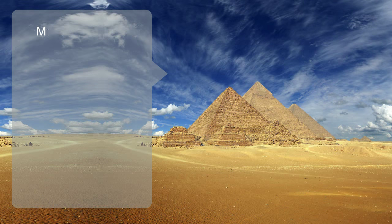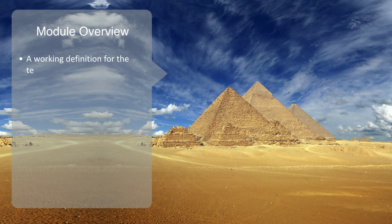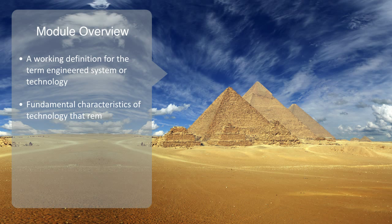In this module we're going to lay down a working definition for what exactly we mean by the term engineered system, or technology, as we'll be using the two terms interchangeably. What we want to try and do here is get a grasp on some of the fundamental characteristics that remain invariant whether we're talking about a very simple technology like a shovel or a very complex one like an airport. Many factors will change with the scale and complexity of the system, but the fundamental features of technology will remain continuous, and this will give us something to ground our analysis in.